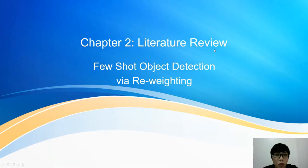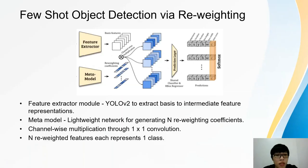Next, I will proceed to Chapter 2, a literature review on few-shot object detection via reweighting. This is a meta-learning framework for low-shot object detection. In general, the framework consists of two main modules: a feature extractor and meta-modules, which are also known as the reweighting modules.